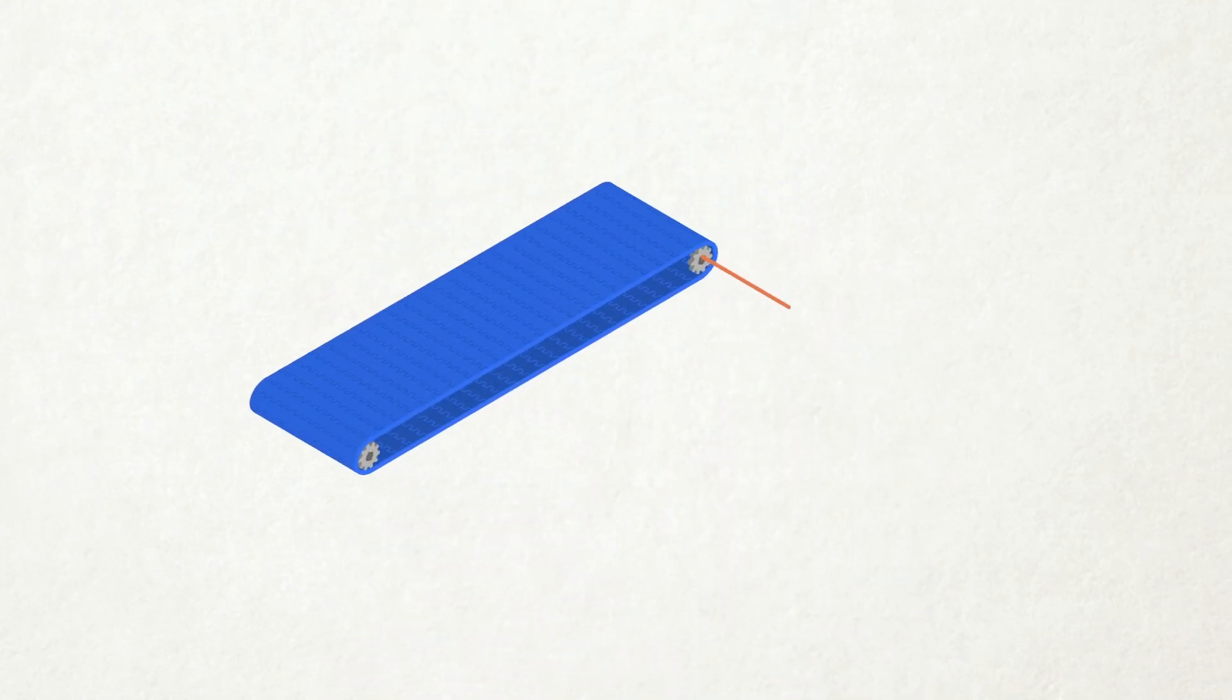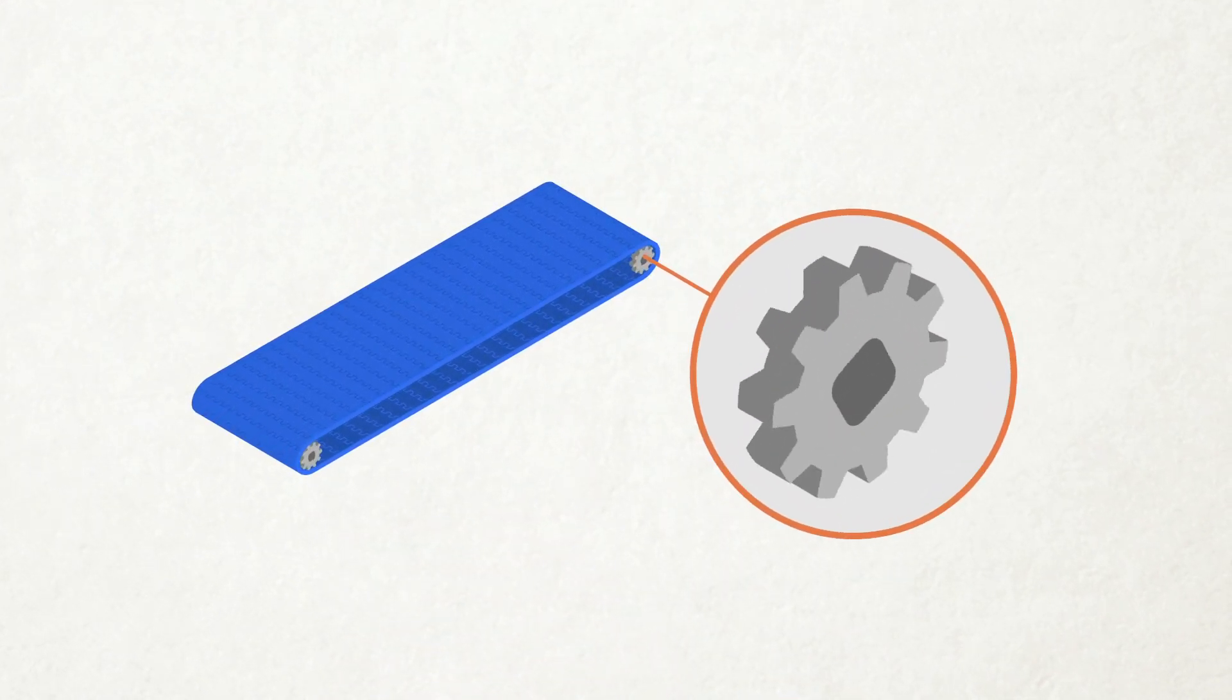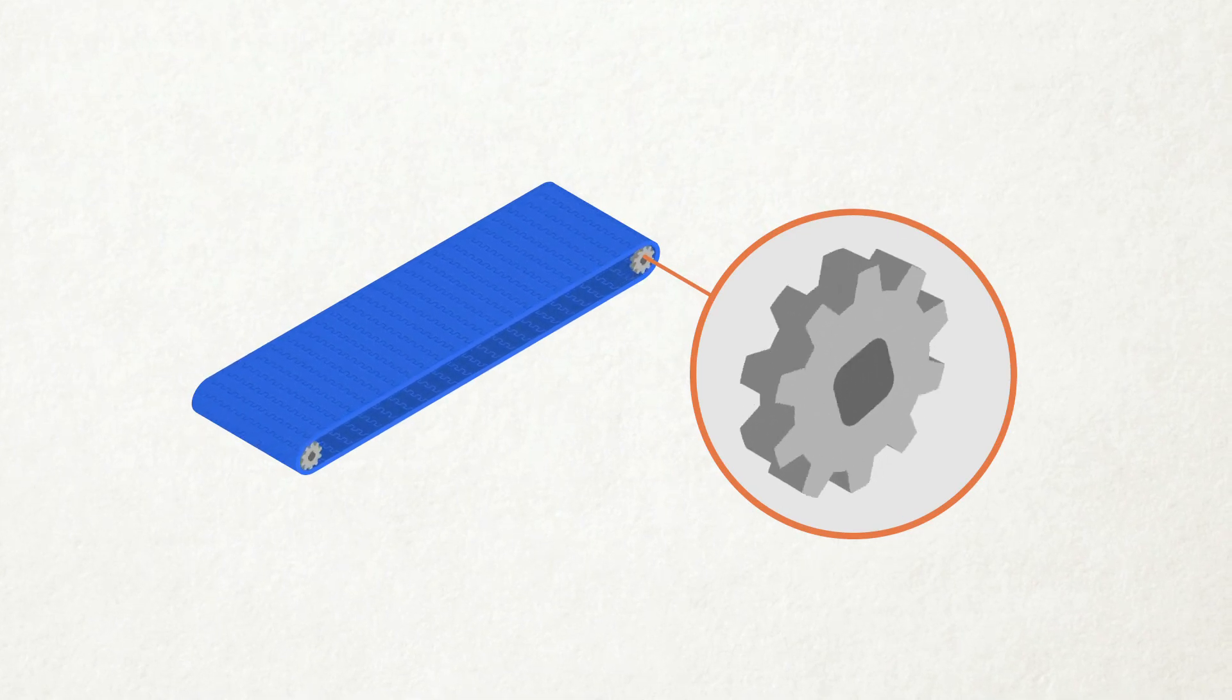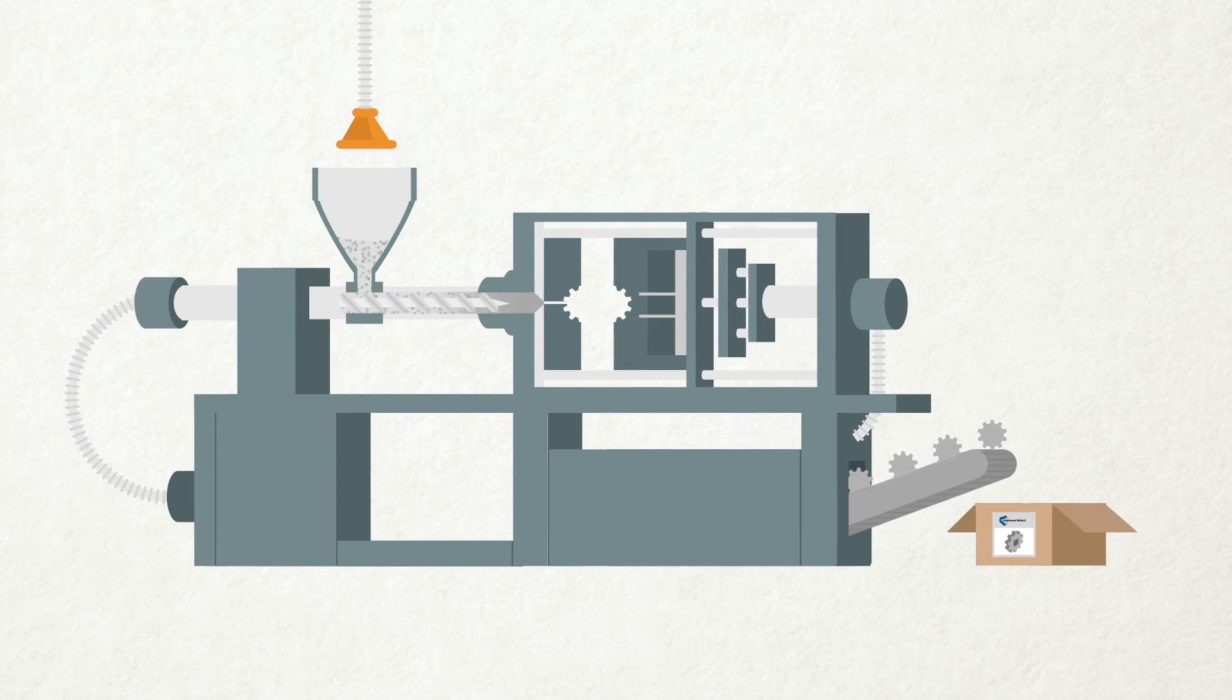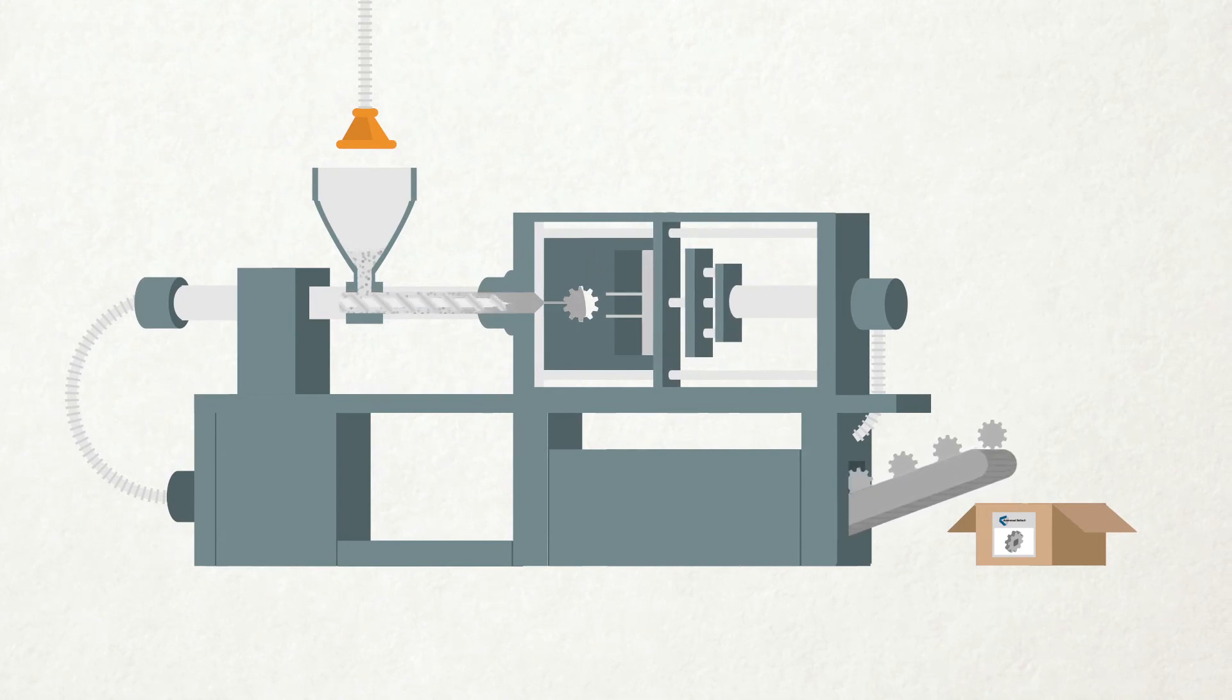On a conveyor, sprockets are needed to drive the belts or chains. Sprockets are mainly molded parts and customers typically order them together with the belts or chains.